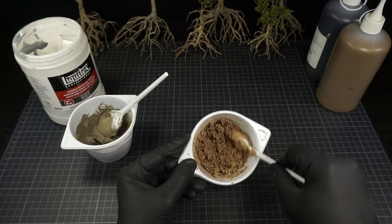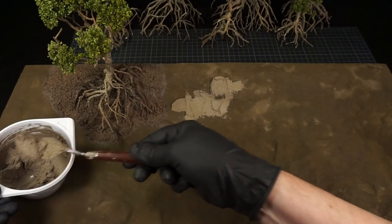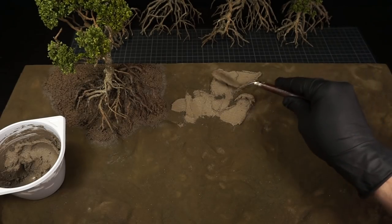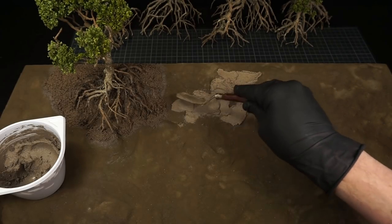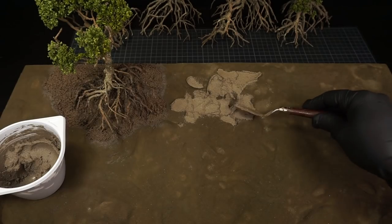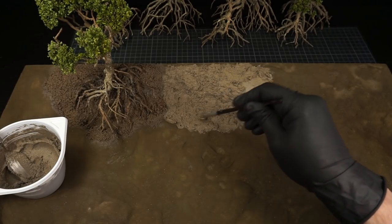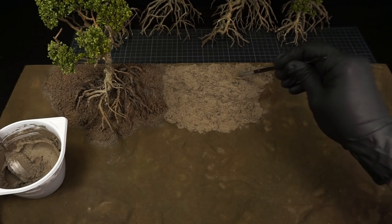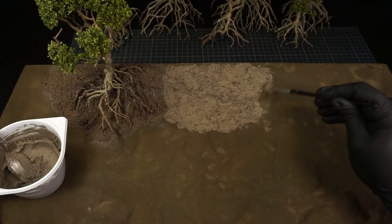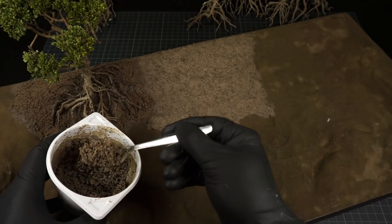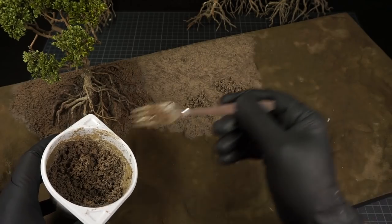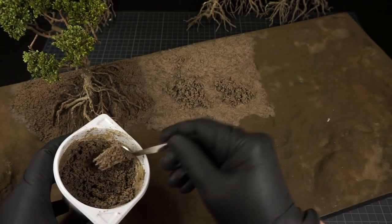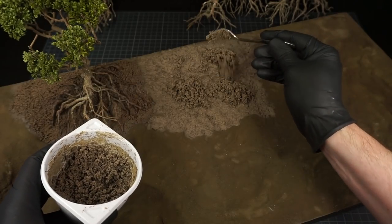With the mixtures ready I then apply them onto the base. I start with the paste mixture and then add the coarser mixture on top of this. To create a texture of loose mud and clay I scatter it loosely over the base and don't press it too firmly.